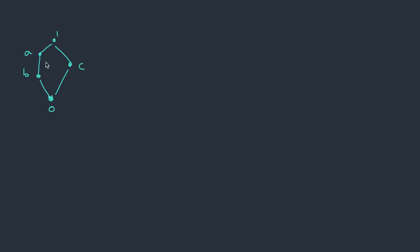Here we have a lattice with 5 elements: A, B, C, 0, and 1. This is the least element and this is the greatest element. When you take an element and perform meet on itself, it gives the same element A. Similarly, if you perform join operation, A join A is again the same element A. This is the idempotence property.